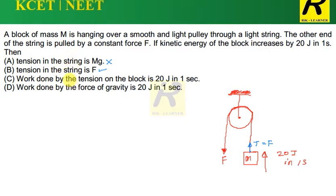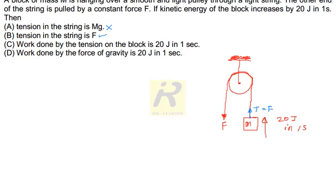Now let us think over Options C and D and why these two are wrong. The kinetic energy acquired by the block is 20 Joules in one second. Kinetic energy acquired is equal to work done by the net force, which is nothing but net force into displacement.